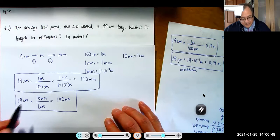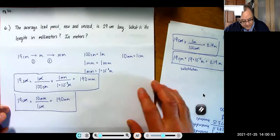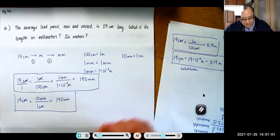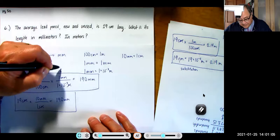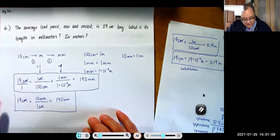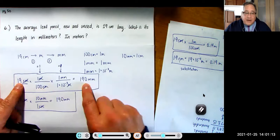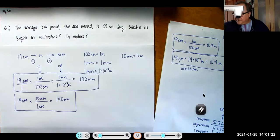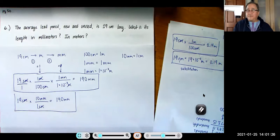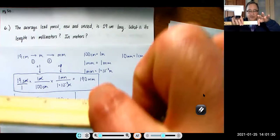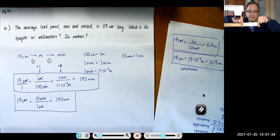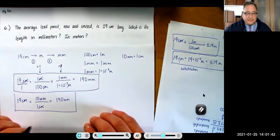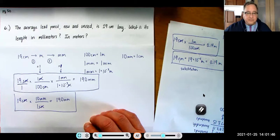You might wonder how the units cancel. Really, 19 cm is 19/1, and each conversion factor equals 1. We're multiplying 19 by 1 by 1, getting the same physical amount but with a different unit and number. If I hold my fingers 19 centimeters apart, that same distance is also 190 millimeters.